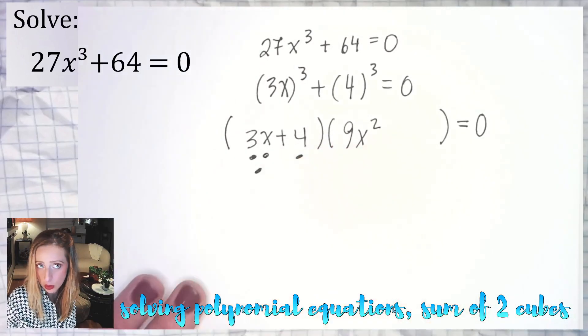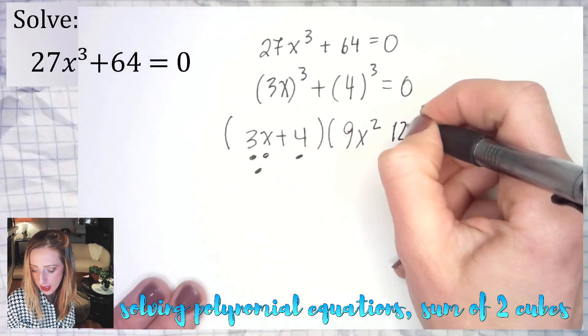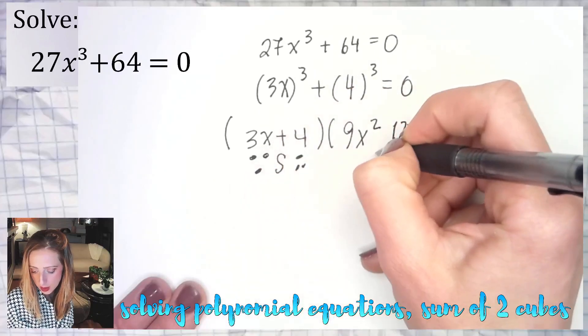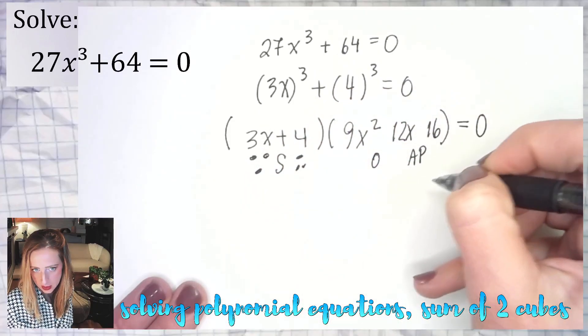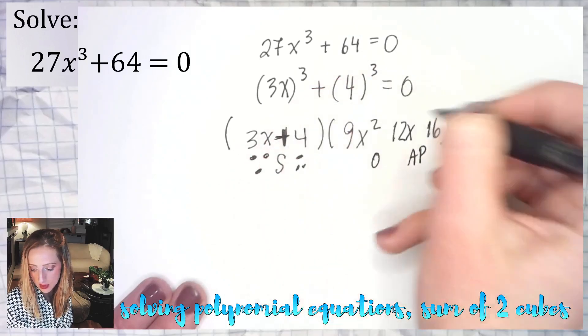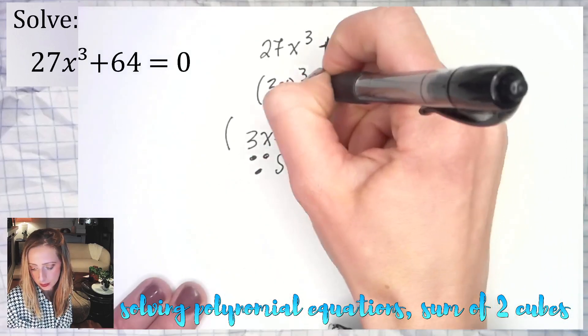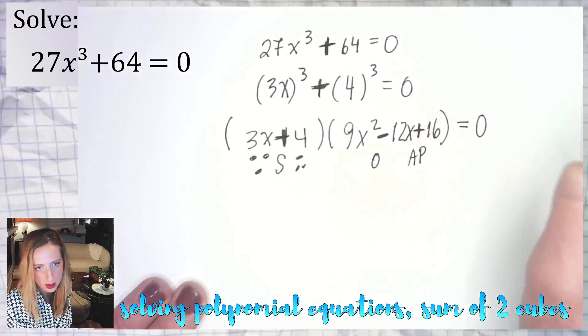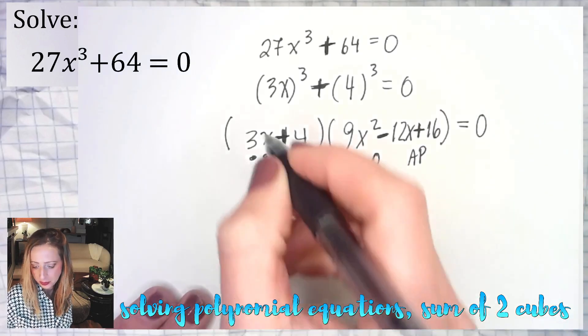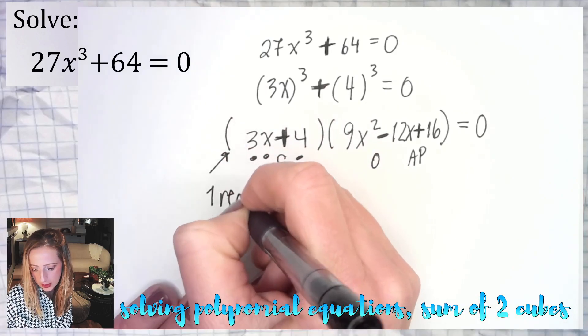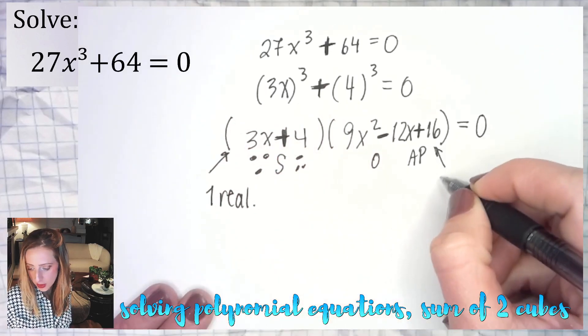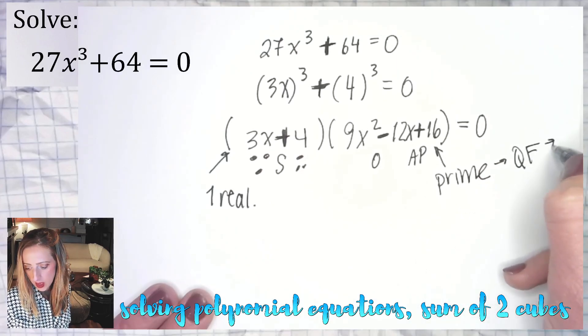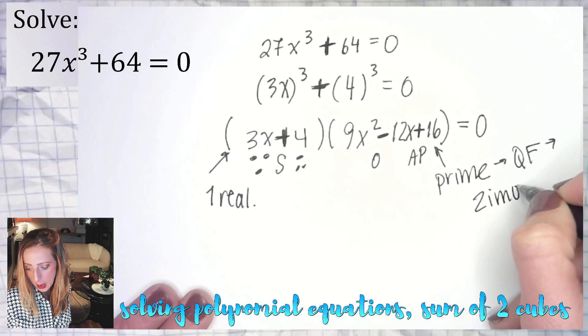Next we do 3x times 4. You don't do the signs yet. That's going to be 12x, and then 4 times 4 is 16. And then we use our mnemonic device. Pay attention to where I'm writing them. S stands for same, same as the original problem. O stands for opposite, and AP is always plus. From there, here you will get one real answer. From here, I promise you, it's prime. You will have to use quadratic formula and you will always get two imaginary solutions from that part.